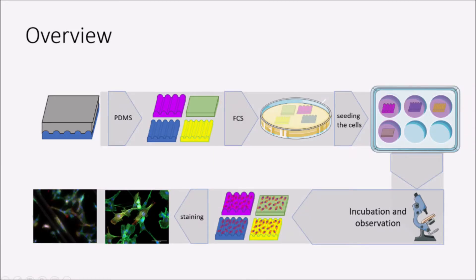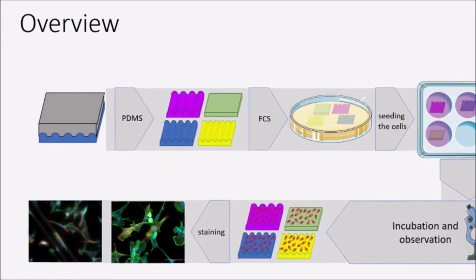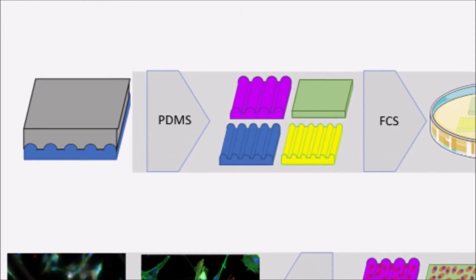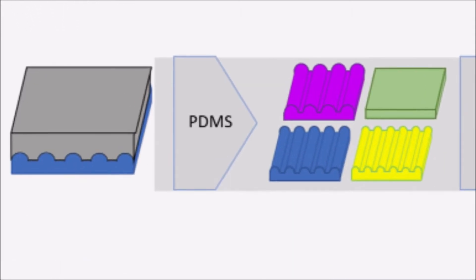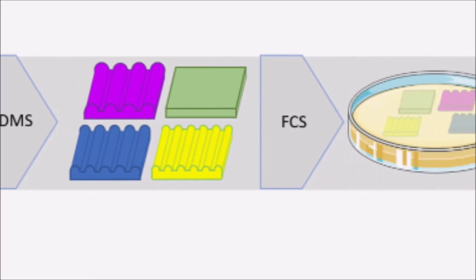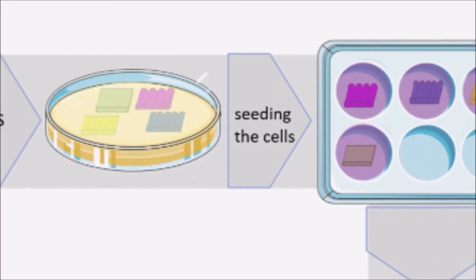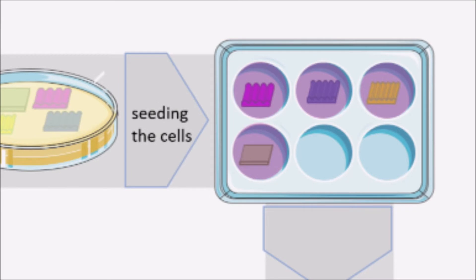The goal of our project was to investigate the behavior of myoblasts on differently curved polymer substrates. Therefore, we seeded and cultured those cells on convex PDMS surfaces with three different radii.